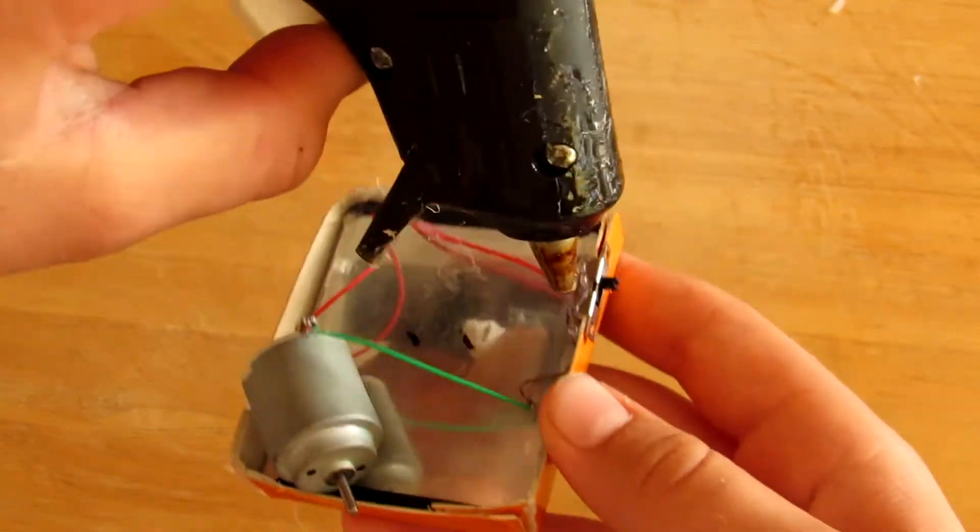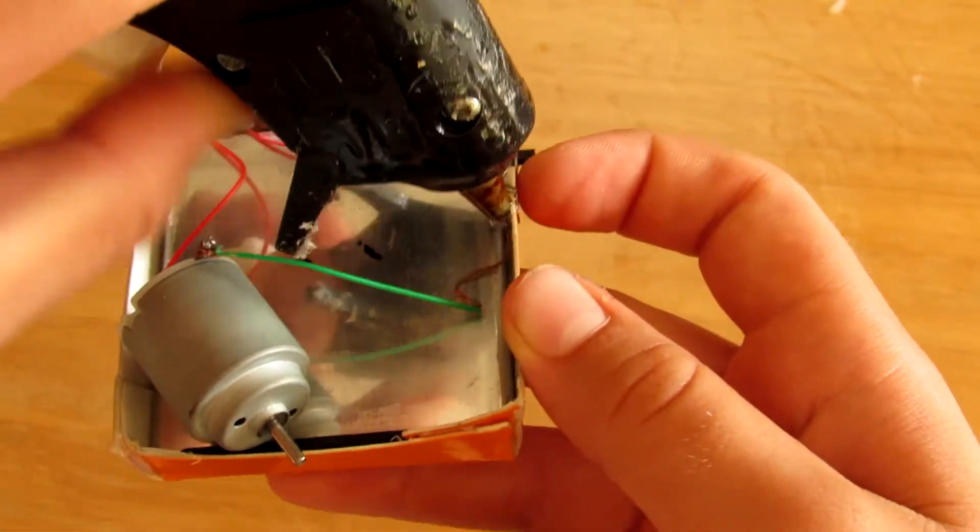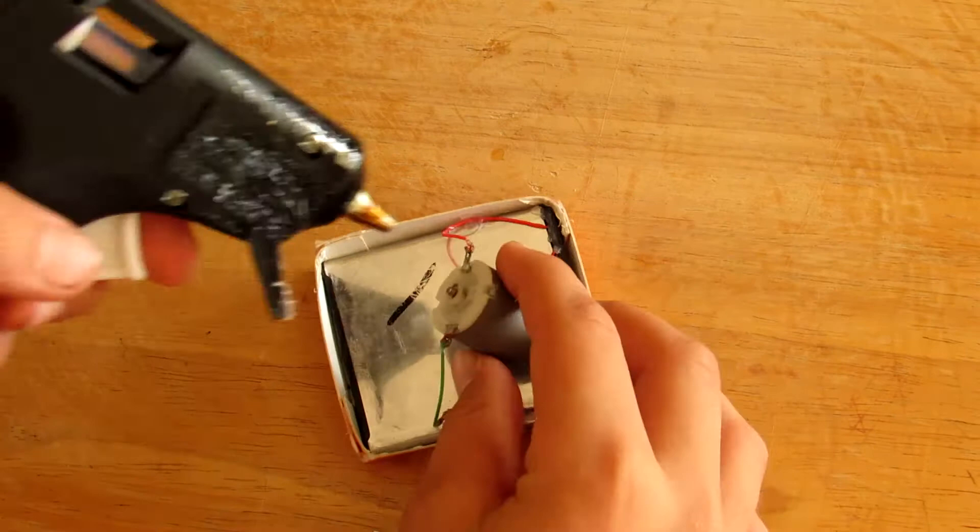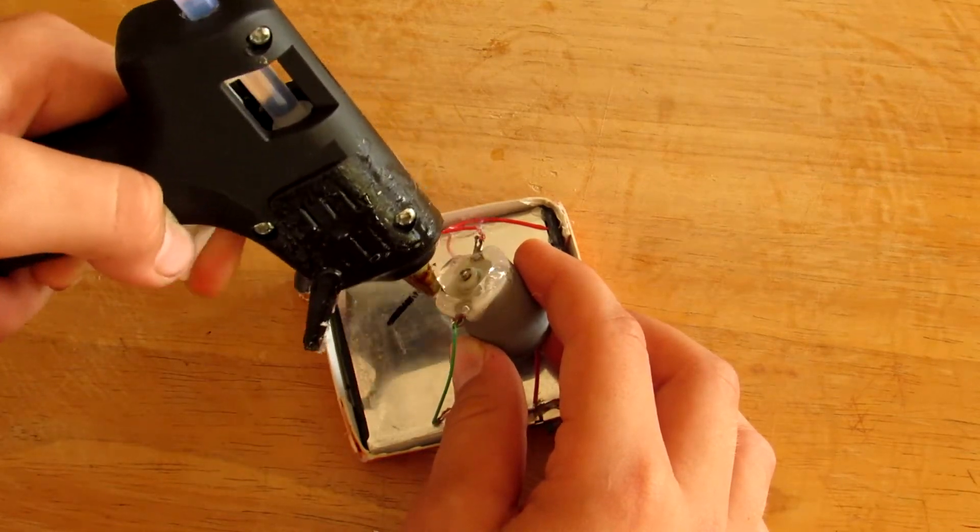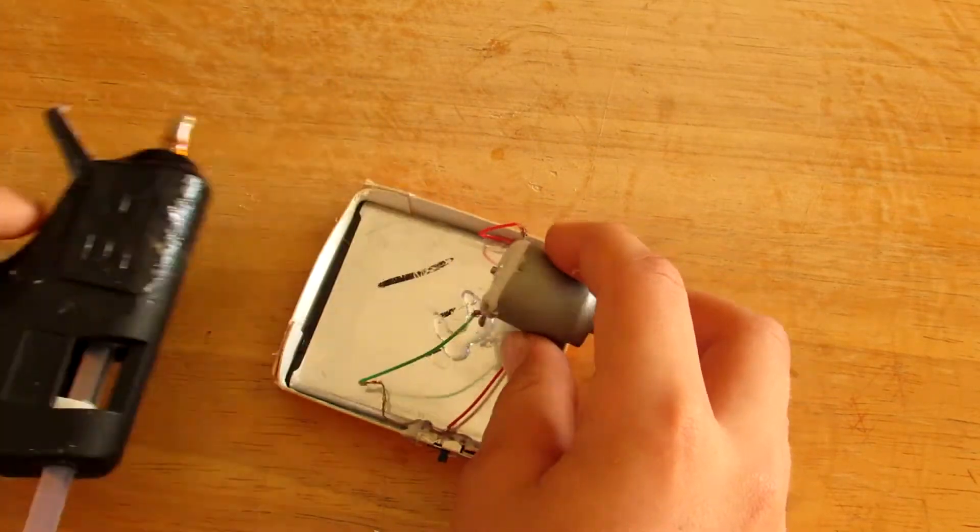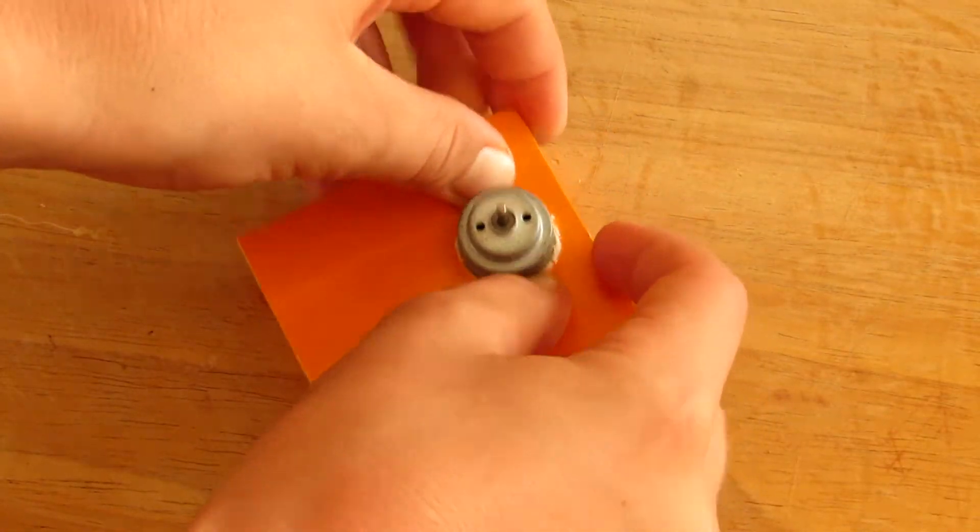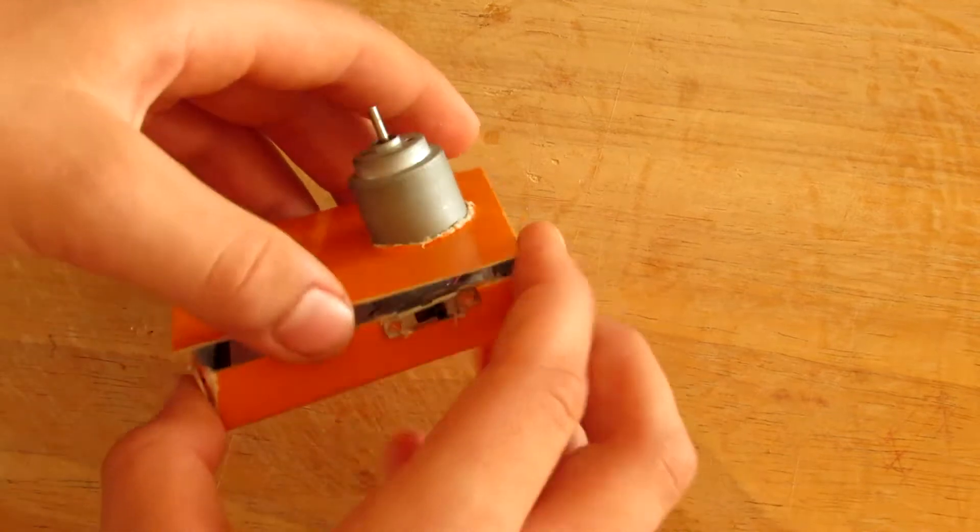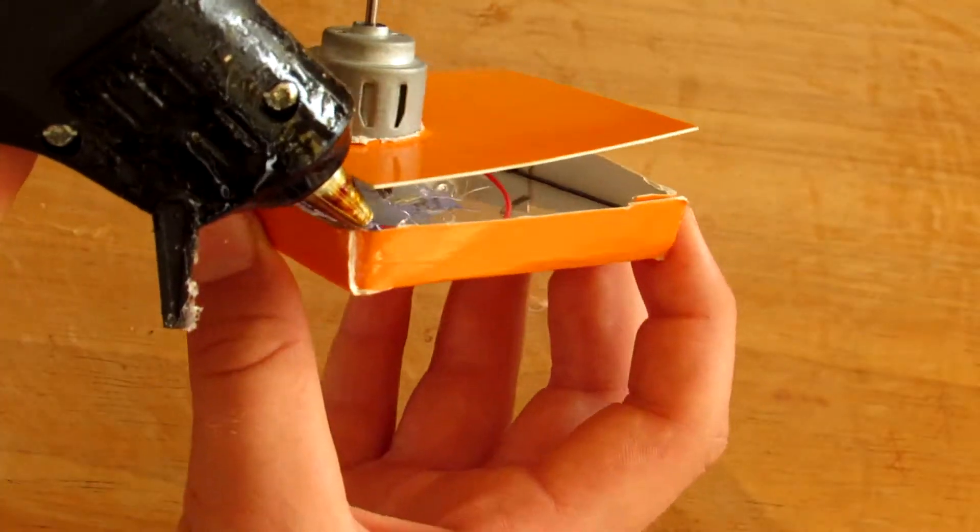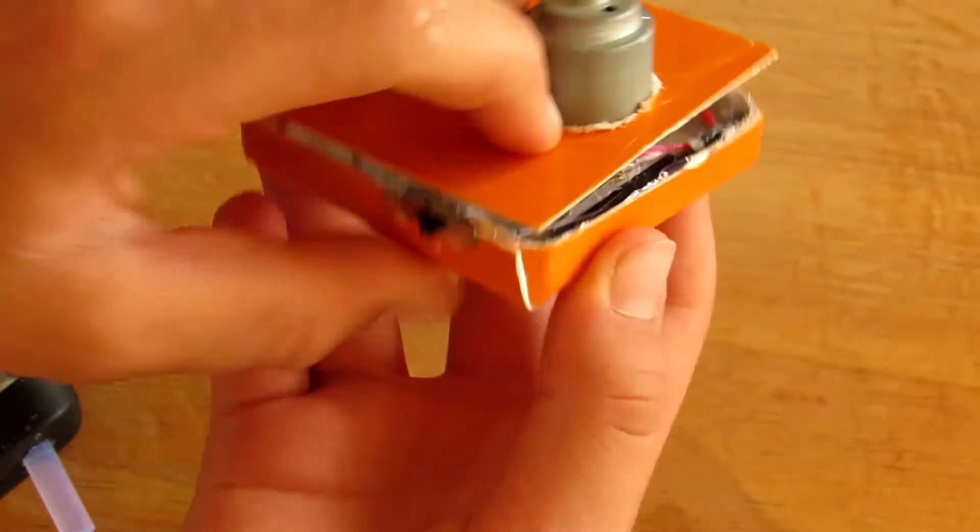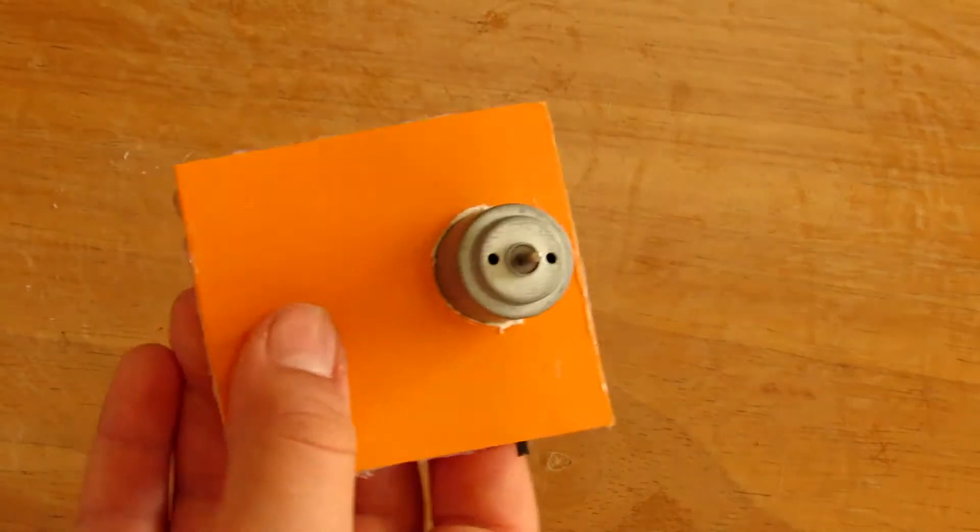Now let's glue the DC motor to the battery. Now let's attach this piece of cardboard to it and now we're going to glue it. And if necessary take a pair of scissors and cut the excess edges if you want.